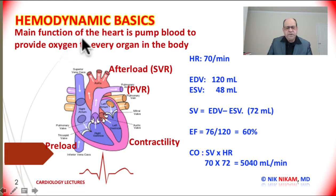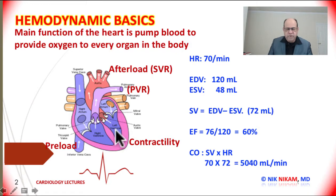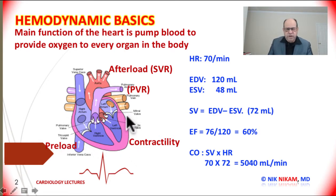The main function of the heart is to pump blood to provide oxygen to every organ in the body, including itself. The ability of the heart to pump blood is based on three important parameters: namely the preload, or the amount of venous blood returning to the left ventricular chamber; the contractility, or the force with which the ventricle contracts; and afterload, that is the resistance against which the ventricle has to squeeze. These three parameters determine the ability of the heart to pump adequate blood into the circulation beat after beat.